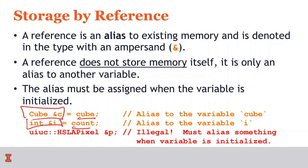Because reference variables have to be assigned when they're initialized, a line like 'HSLPixel reference variable p semicolon' is not valid code because it does not create an alias at initialization. If you run this through a compiler, this code won't even compile.